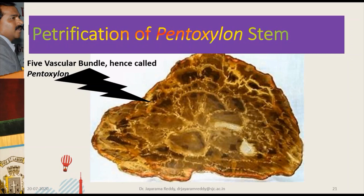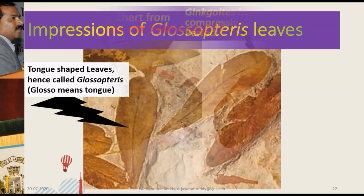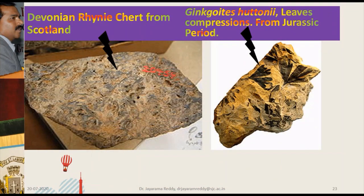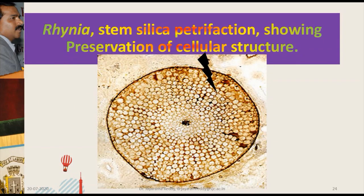A petrification in transverse section. These are the impressions of Glossopteris leaves — Glossopteris means tongue, and the leaves are tongue-shaped. Rhynia fossils, Ginkgo fossils. This is the stem of Rhynia — we can see the petrification cut into a thin section, and you can see the fine details of the cellular arrangements of Rhynia.